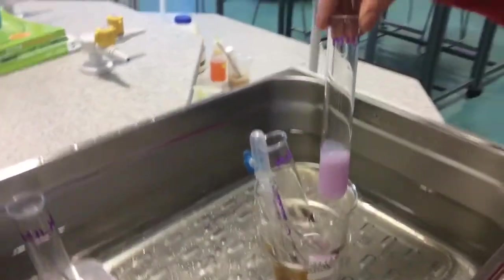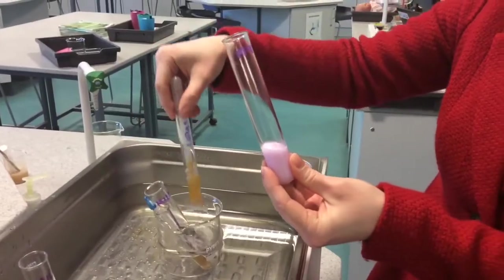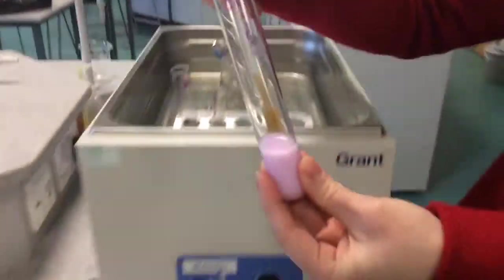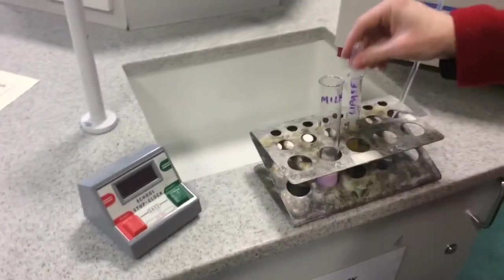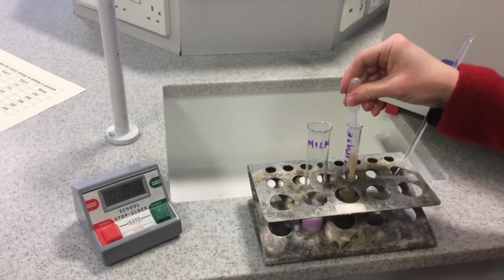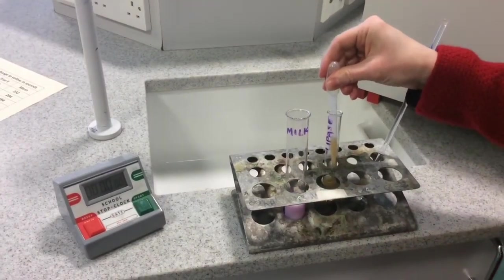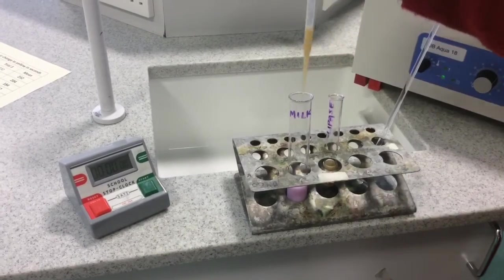I'm going to take my milk solution out, which is still purple, with some lipase, which again is at 60. Transfer those. Okay, so I'll want to take 1 cm cubed of lipase, and as soon as it goes into the milk, you start timing.